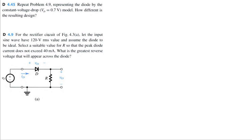So for the rectifier circuit here, let the input have a sine wave with a 120 volt root mean square value, and this time the diode is not ideal, it's going to be a constant voltage drop. Then we want to select the suitable value for R so that the peak diode current does not exceed 40 milliamps. Let's start with that question.